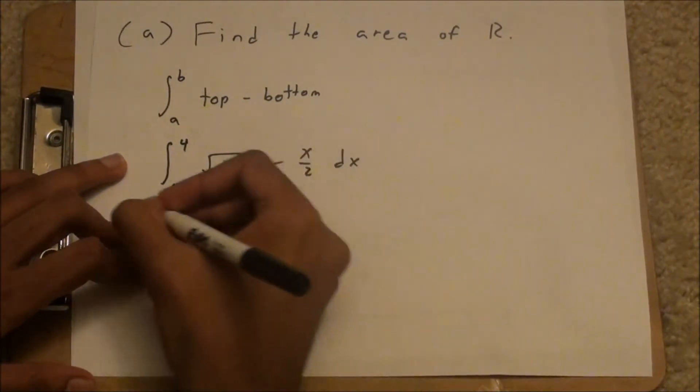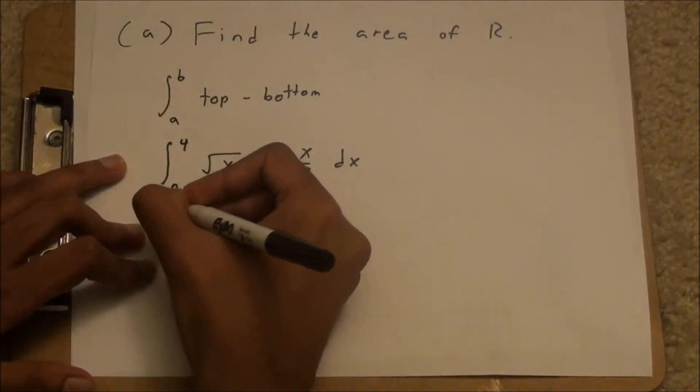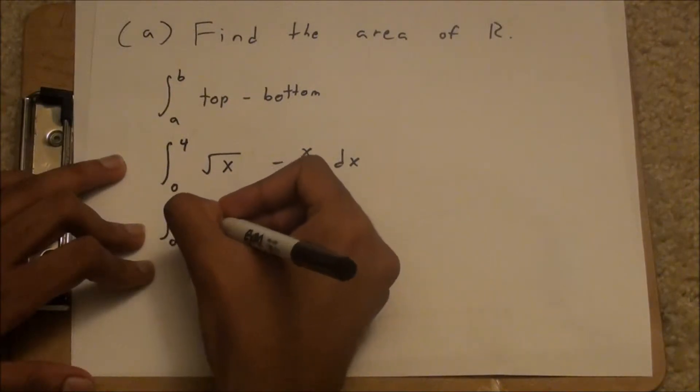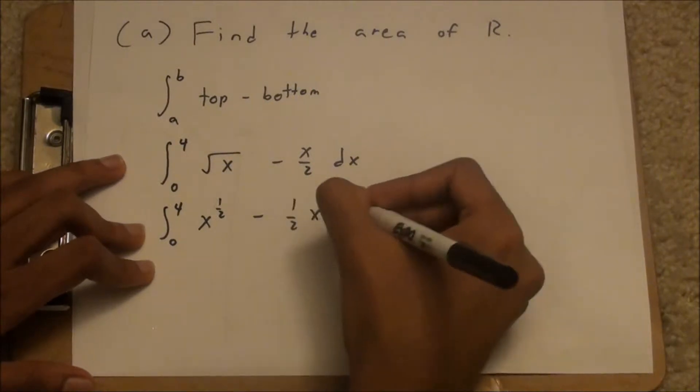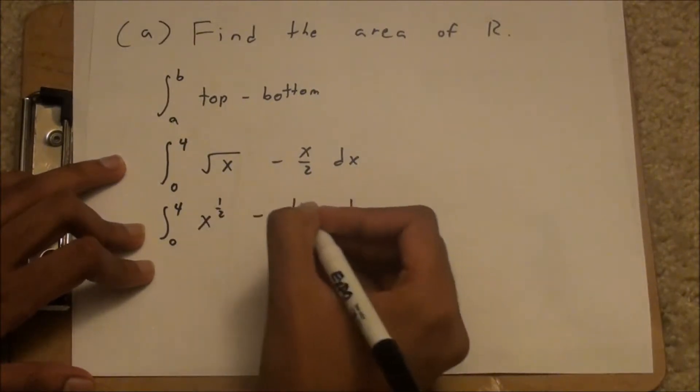And you can rewrite this so it is 0 to 4 x to the 1 half minus 1 half x dx, just so it's easier to integrate.